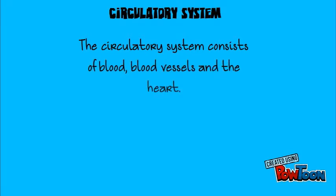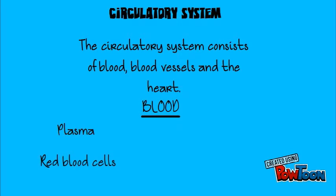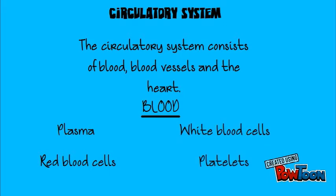The circulatory system. The circulatory system consists of blood, blood vessels, and the heart. The blood consists of plasma, red blood cells, white blood cells, and platelets.